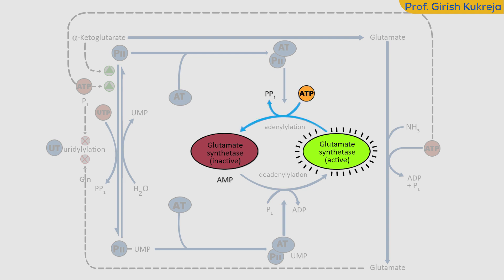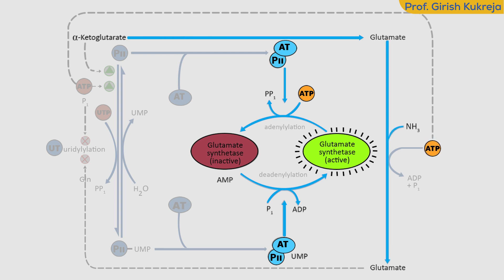This addition and removal of AMP is catalyzed by an enzyme called adenyl transferase (AT). This enzyme responds to the levels of glutamate, alpha-ketoglutarate, ATP, and inorganic phosphate.